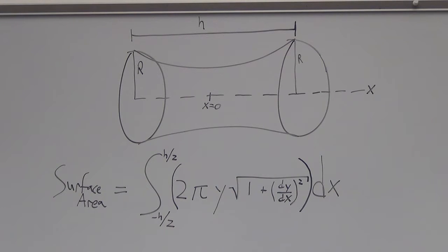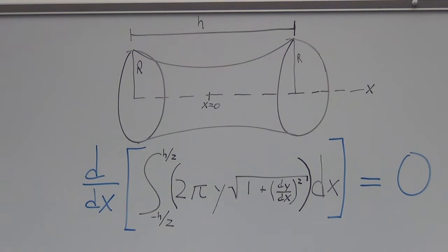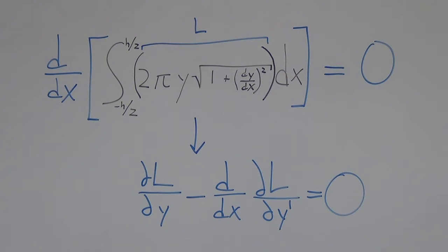To minimize the surface area, we add up all the small contributions in this integral. Then we take the derivative of the whole thing and set it equal to zero. This gives us the Euler-Lagrange equation. After solving for y as a function of x, we receive the hyperbolic cosine function.